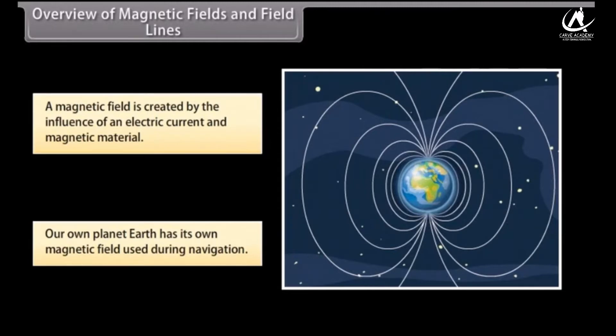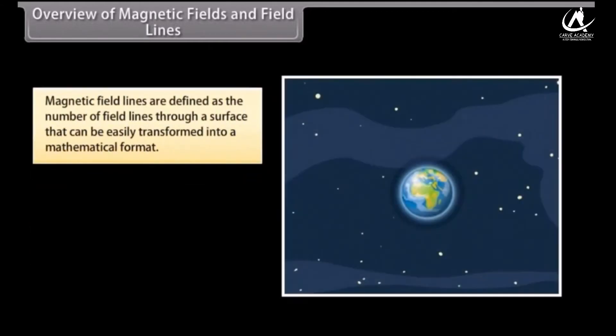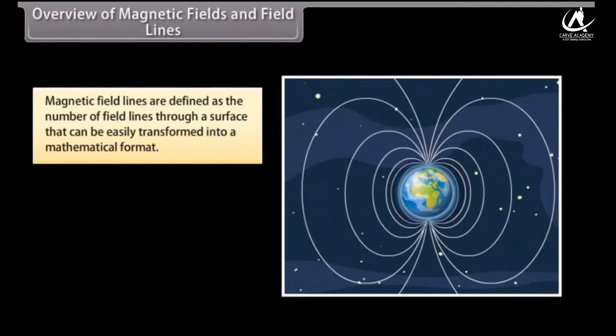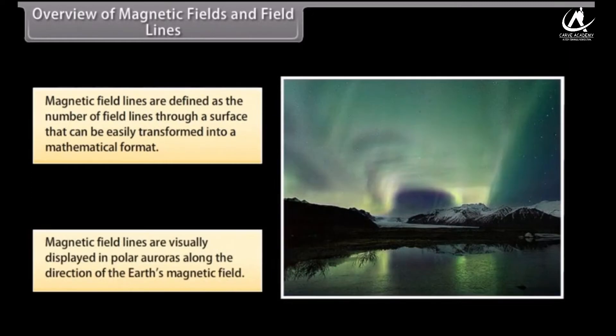Magnetic field lines can be compared to the constant altitude lines that are visible on a map. Magnetic field lines help in stating simple concepts of magnetism easily. These are defined as the number of field lines through a surface that can be easily transformed into a mathematical format. Magnetic field lines are visually displayed in polar auroras where visible streaks of lines are created along the direction of Earth's magnetic field.